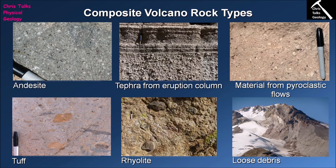Composite volcanoes produce a larger range of rock types compared to mafic volcanoes. The vast majority — tephra, pyroclastic material, and tuffs — are related to the explosive portion of the eruption, which differs from mafic volcanoes that tend to erupt non-explosively. This explosive style reflects the high volatile content of intermediate lavas, which makes them more likely to cause explosive eruptions. Thank you for watching everybody, and have a good day.